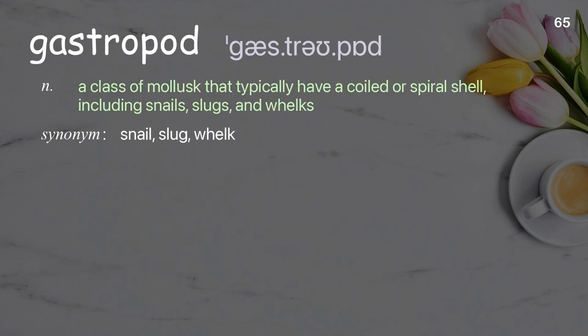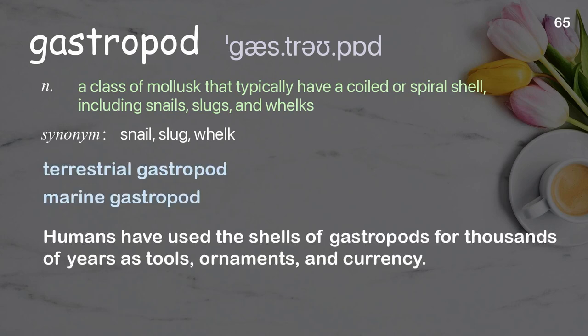Gastropod. A class of mollusk that typically have a coiled or spiral shell, including snails, slugs, and whelks. Examples: terrestrial gastropod, marine gastropod. Humans have used the shells of gastropods for thousands of years as tools, ornaments, and currency.